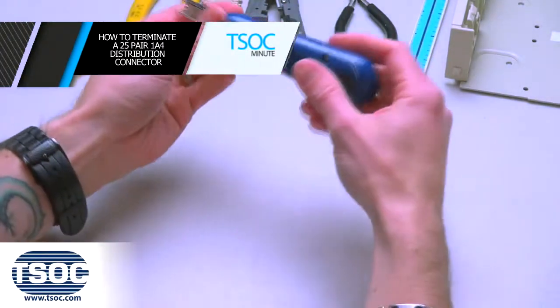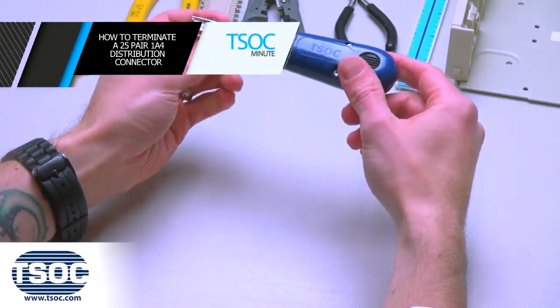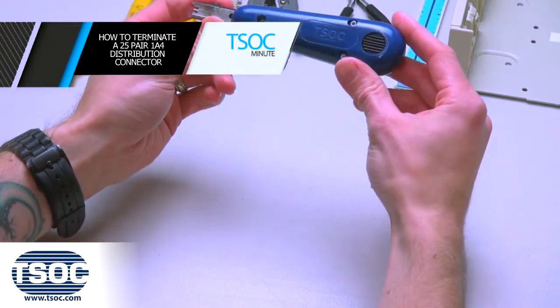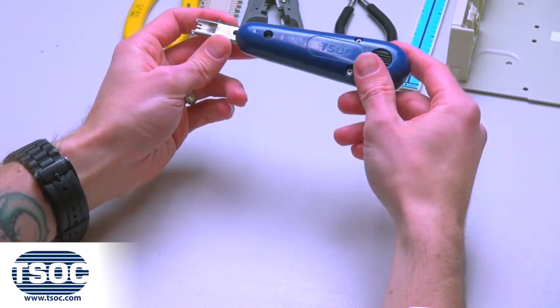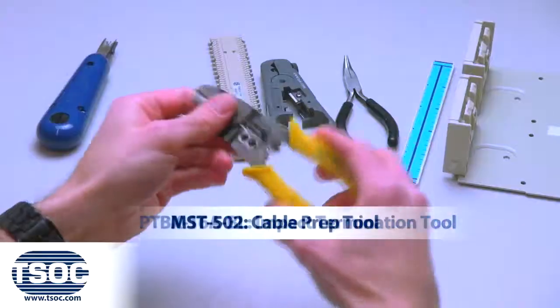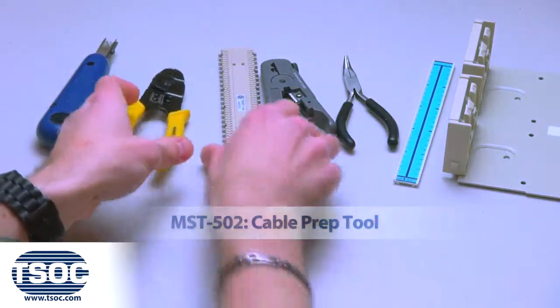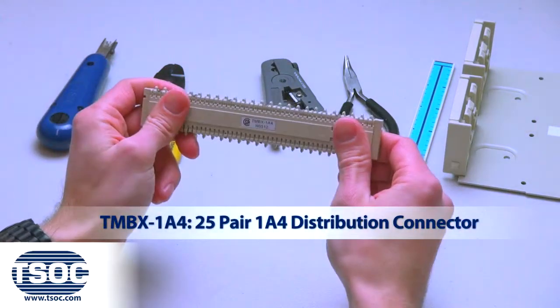How to Terminate a 25-Pair 1A4 Distribution Connector. Materials Required: Impact Termination Tool, Cable Prep Tool, 25-Pair 1A4 Distribution Connector,